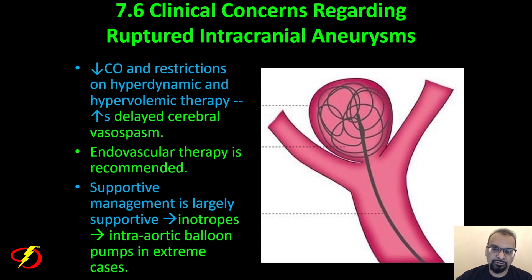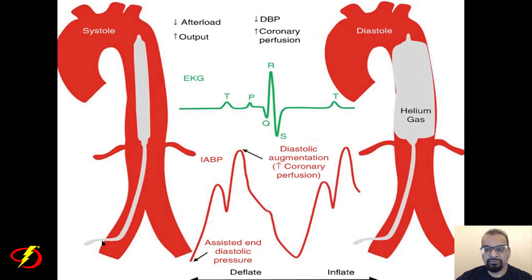Cardiac output goes down and restrictions on hyperdynamic and hypervolemic therapy occur due to reduced cardiac output, which can increase delayed cerebral vasospasm. In these patients, endovascular therapy is recommended. Management is largely supportive, but inotropes can be used, and in severe cases, intra-aortic balloon pumps. An intra-aortic balloon pump is a balloon that goes into the aorta and inflates during diastole, increasing diastolic augmentation and coronary perfusion.